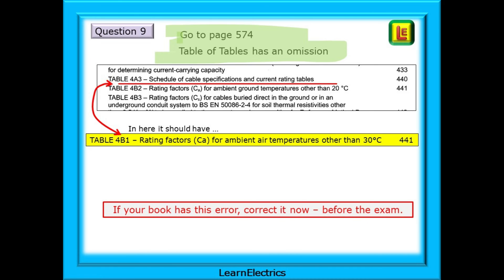Go to page 574 where you will find that Table of Tables has an omission. Between the entry for Table 4A3 and 4B2 we should have Table 4B1. If it's not there, if your book has this error, correct it now before the exam. The data shown here in the yellow box should be written onto page 574 somewhere so that you have it available if needed in the exam.